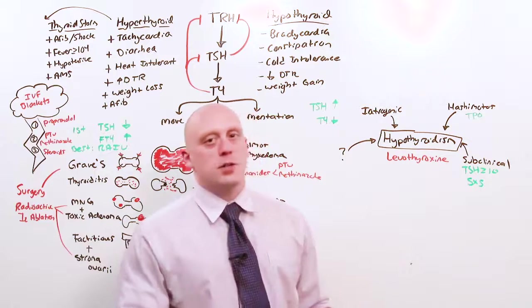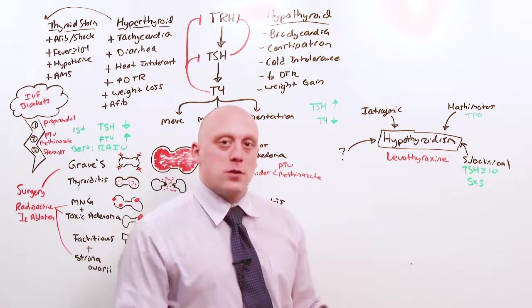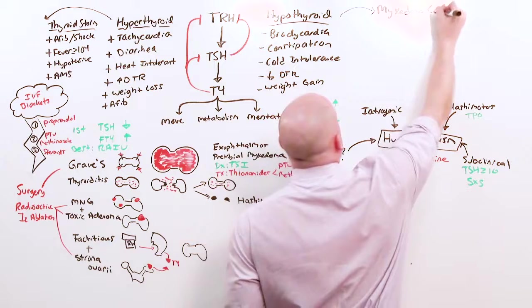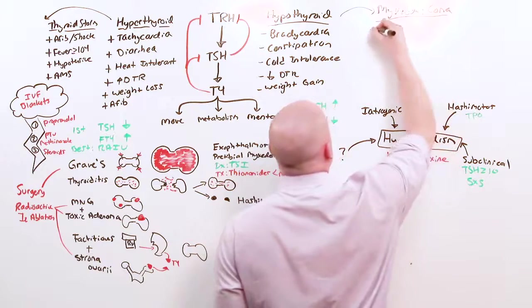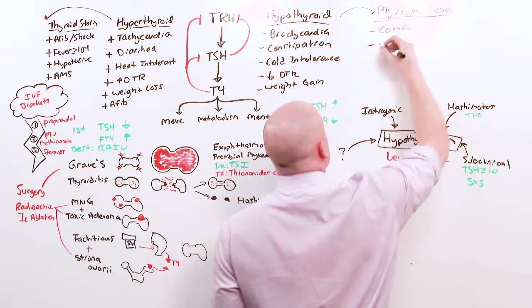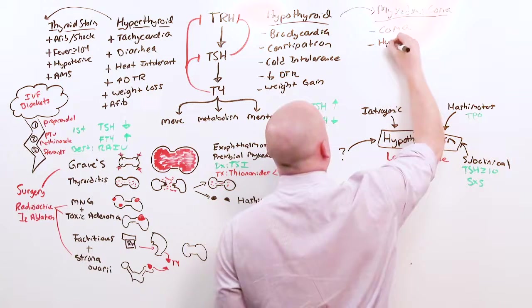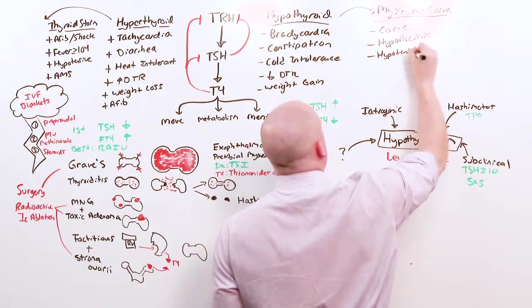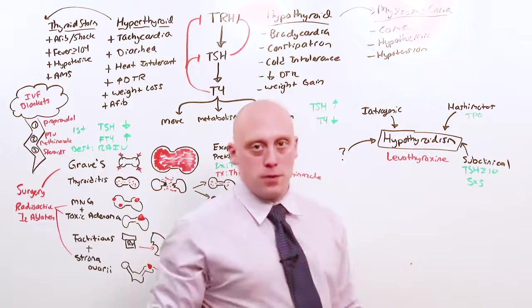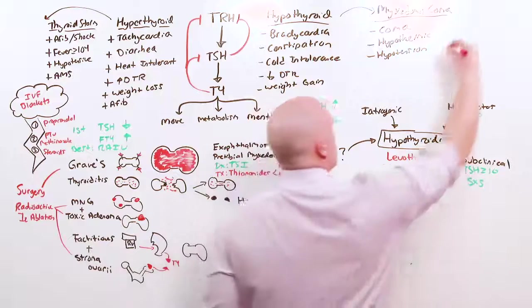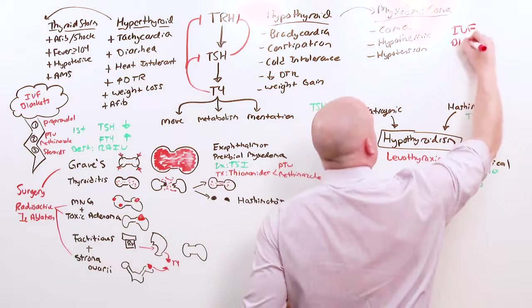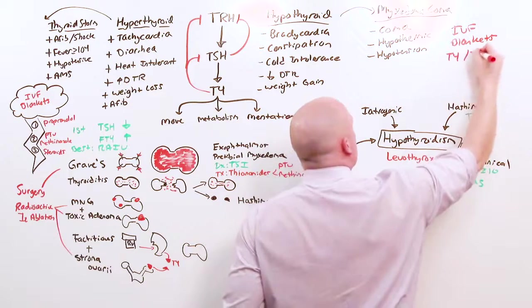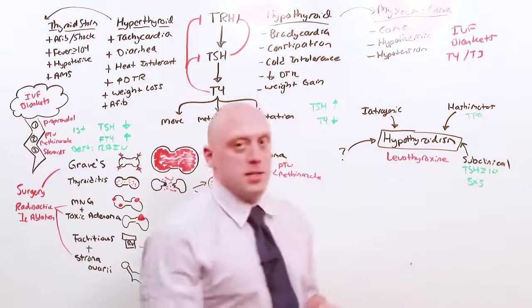Just as we had thyroid storm, we have a severe illness on the other side called myxedema coma. In myxedema coma, one, you're in a coma. You're not just cold intolerant, you're actually hypothermic. The hypothermia is leading to hypotension. Very similarly to treatment of thyroid storm, we use IV fluids, only this time they're warmed, and blankets that are warmed to get the temperature up, and then we give them what they don't have. Give them IV T4, and if that doesn't work, the more potent form, T3.